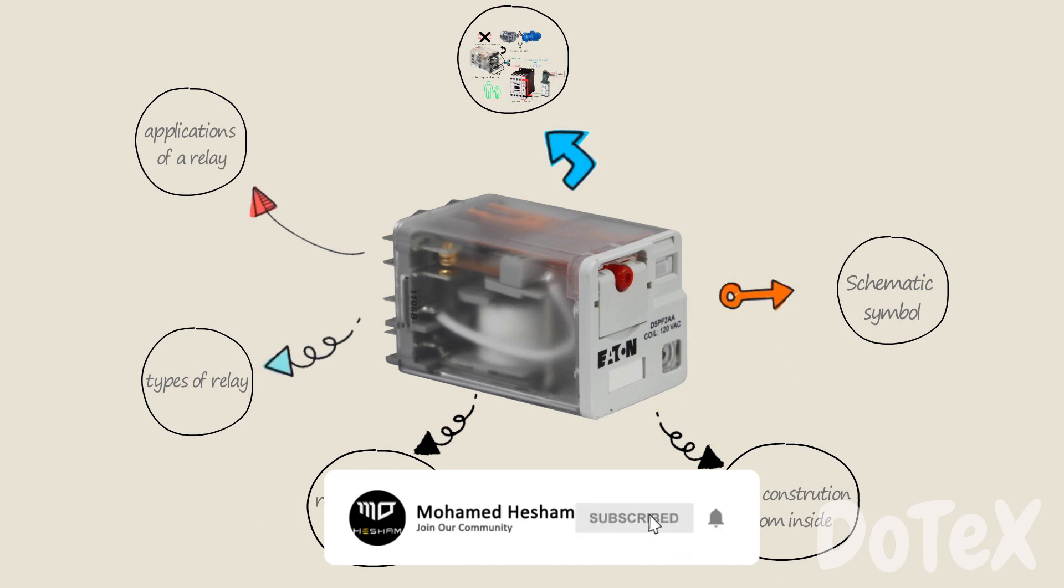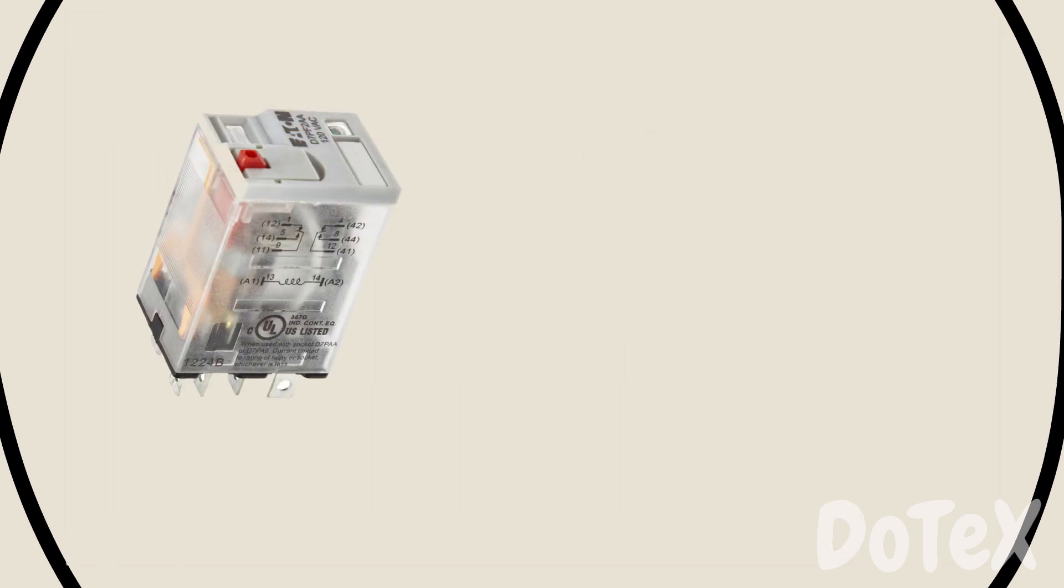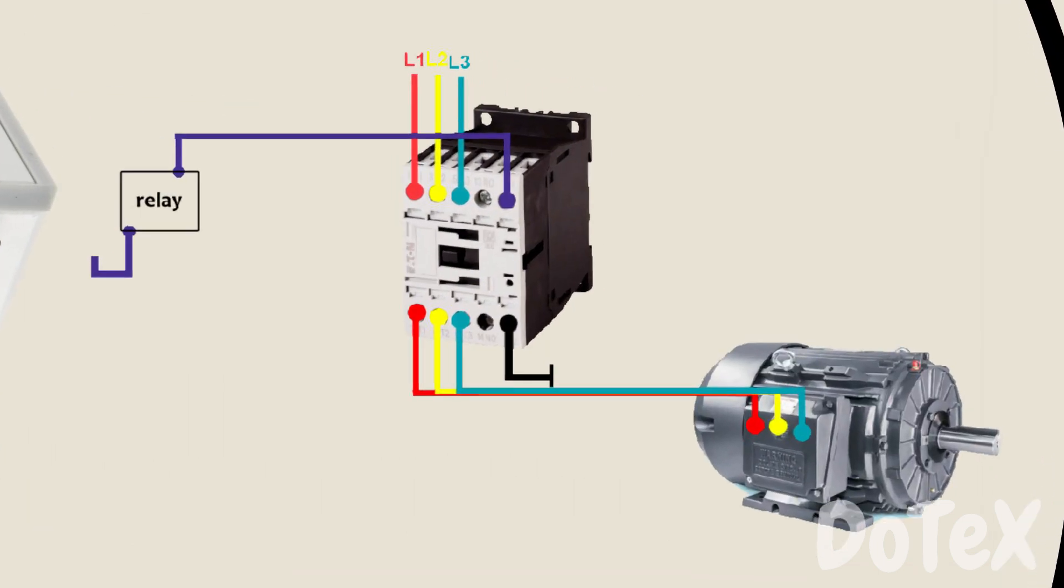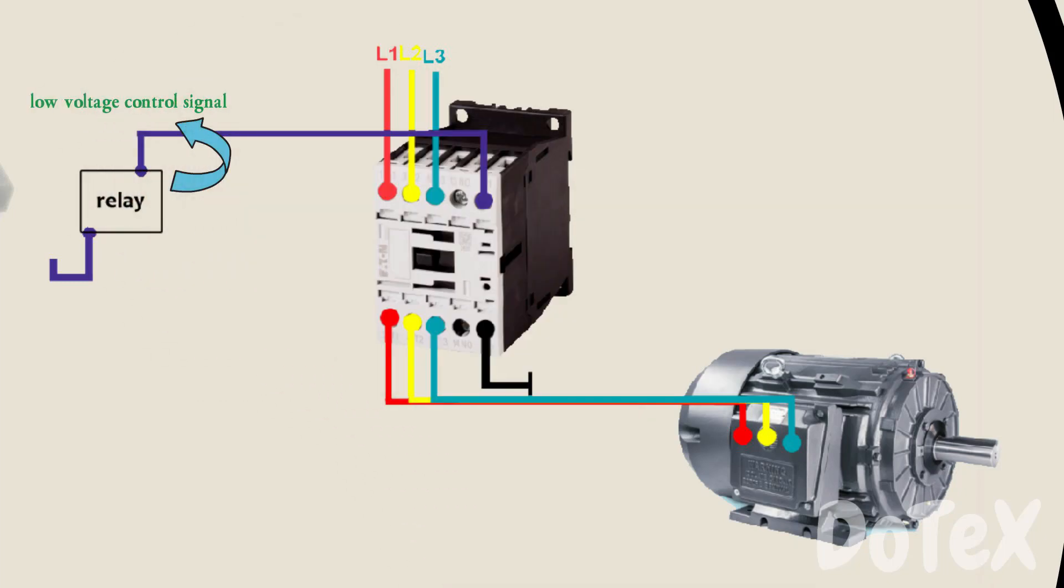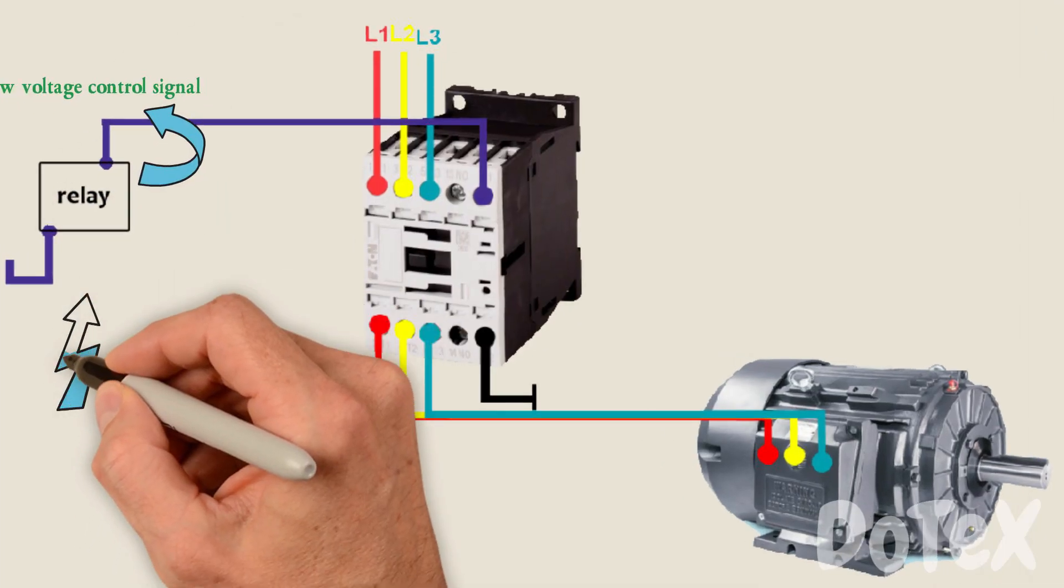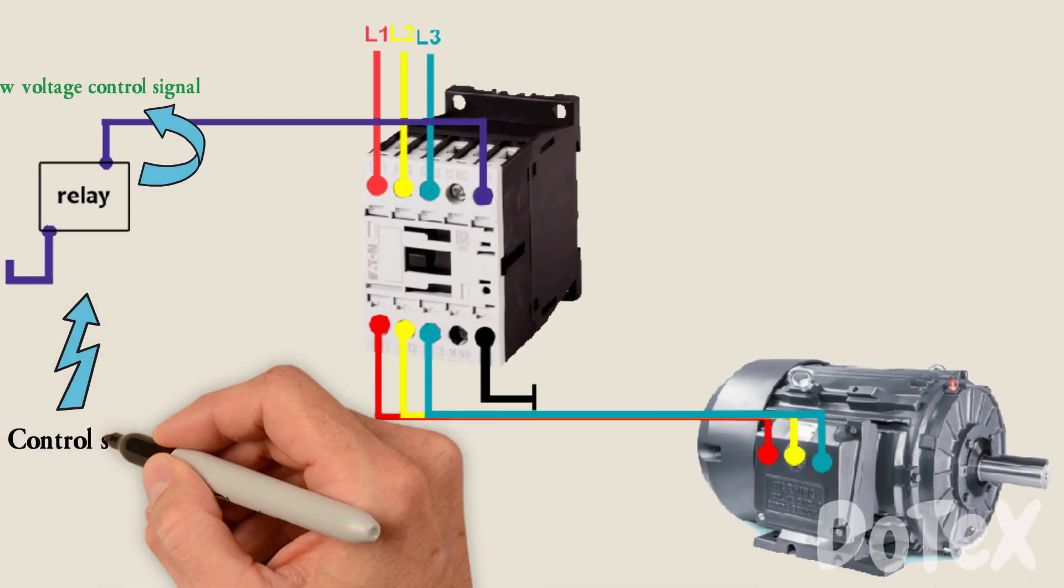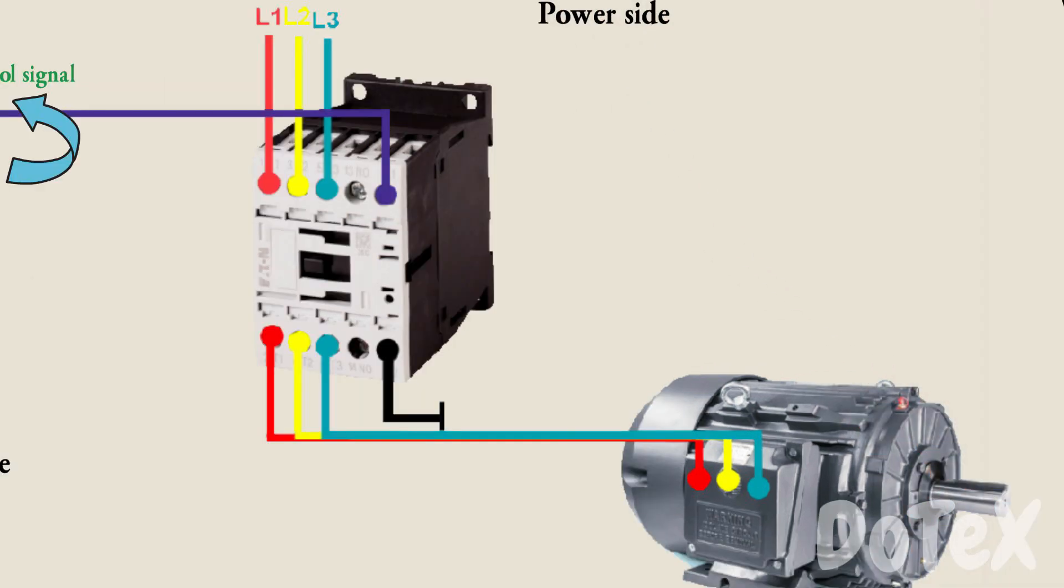Our next point is the applications of a relay. Relays are used in applications when it's necessary to control a circuit with a low voltage control signal with complete electrical isolation between the control and the power side of the system.